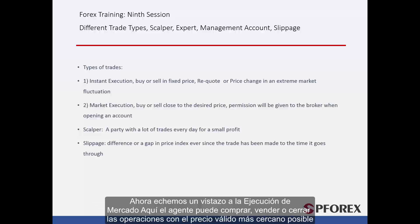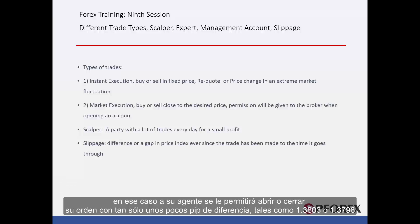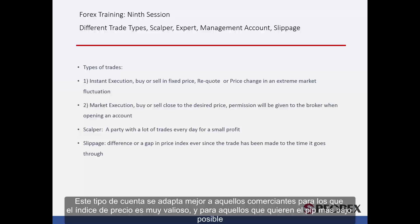Now let's look at market execution. Here the broker can buy, sell or close trades with the closest valid price possible. For instance, imagine the current value of EUR against USD is at 1.3800 and you intend to open or close an order at this time. Your broker is allowed to open or close your order with only a few PIP changes, like 1.3803 or 1.3798. This account type is best suited for traders for whom price precision is very valuable and who are looking for the lowest PIP possible.